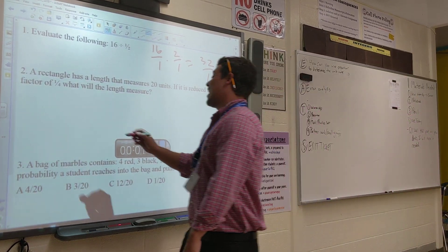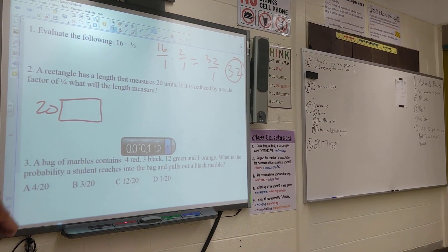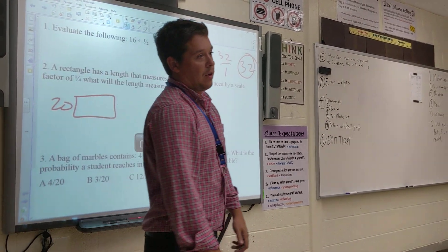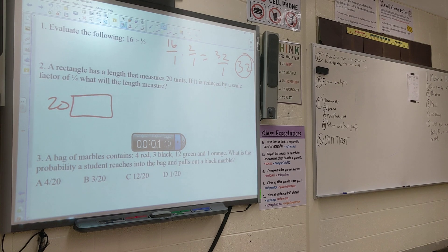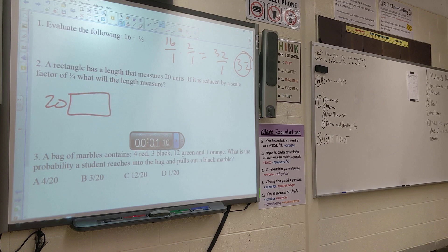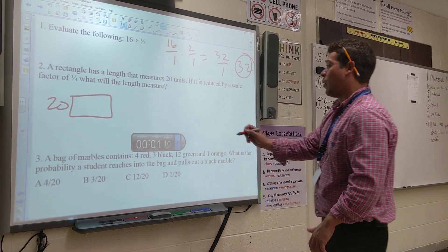Number 2, a rectangle has a length that measures 20. It's reduced by a scale factor of 1 fourth. Claire, if it is reduced, does that mean our final answer is going to be more or less than 20? Less. It's reduced, right? It's going to get smaller.